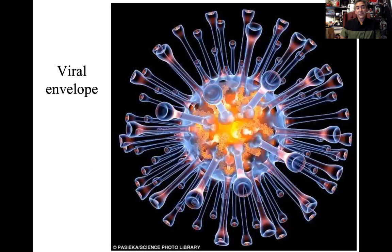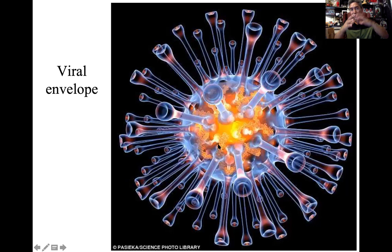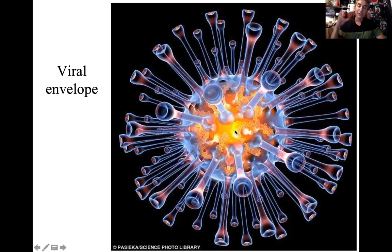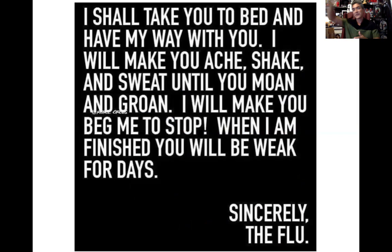Here's a picture of the influenza virus. What we notice is that it has a tremendous number of oligosaccharides — a tremendous number of these envelope markers — masking, hiding, and camouflaging the actual capsid, making it very difficult for our immune system to mount a response. So if you have the flu, you're basically at the mercy of it — it will take you to bed, make you ache, shake, and sweat until you're done, and then it goes and makes life miserable for somebody else.